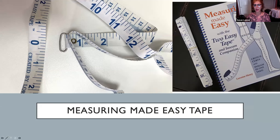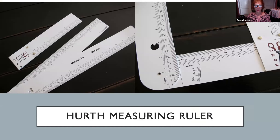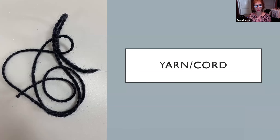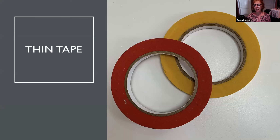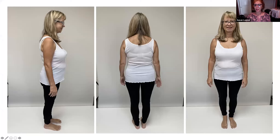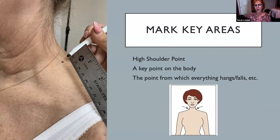I like to use a few different tools. This is a measuring tape by Lorraine Henry — she is a fitting expert who came up with this tape. What I like about it is that it has a zero point in the middle of one of the tapes. We also import a ruler from Germany — it's great for taking certain measurements and also for measuring off clothing to understand how you like your clothes to fit. You should have yarn or cord to tie around your waist, a water-soluble pen and dots to mark key parts of your body, and thin tape. The clothing you should wear is something fairly fitted with the proper bra, because your bust measurements will change according to the bra.